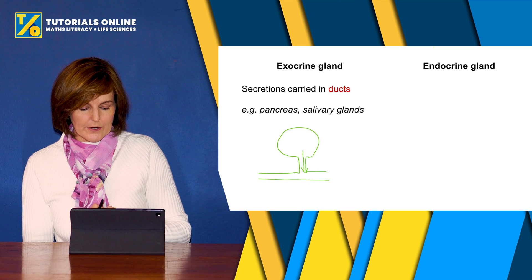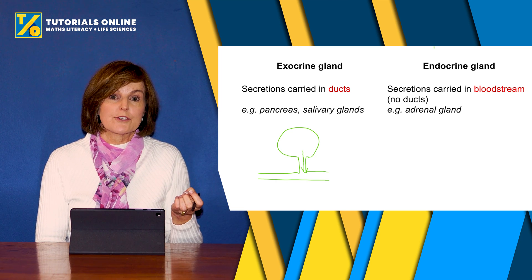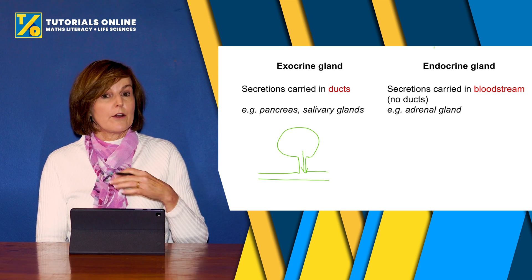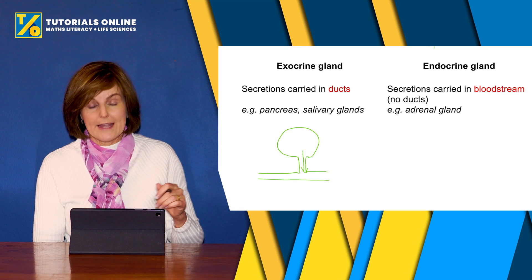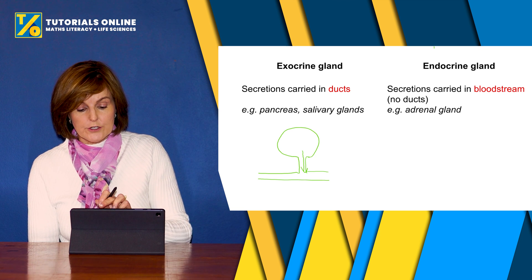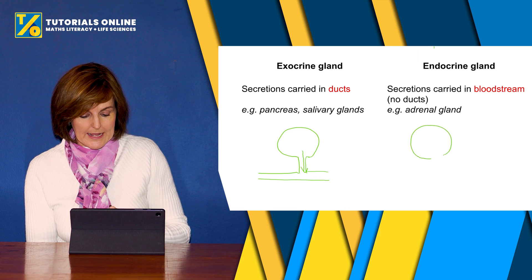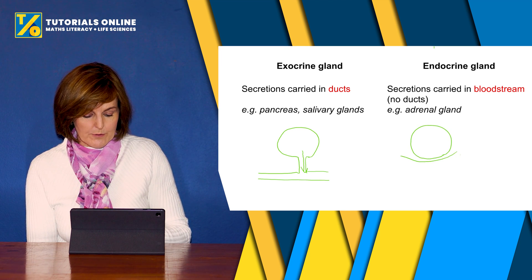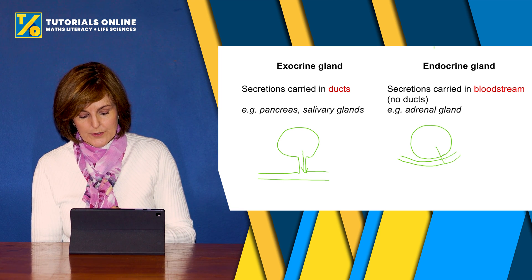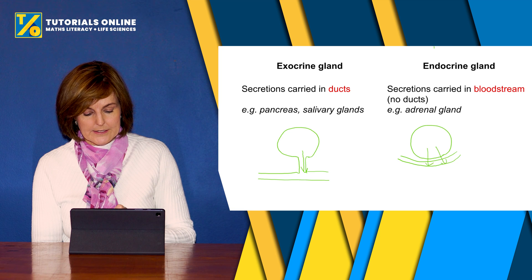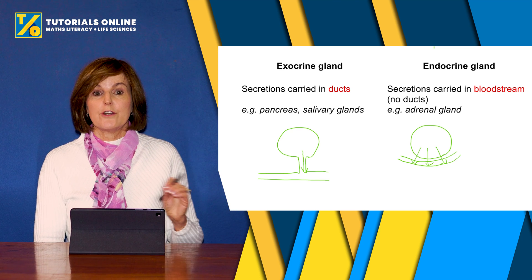The endocrine gland has secretions that are carried in the bloodstream — there are no ducts involved. An example is the adrenal gland. If that's the gland and there's a blood vessel going right past it, then the hormone is secreted directly into that blood vessel and then goes to the rest of the body, so there are no ducts involved.